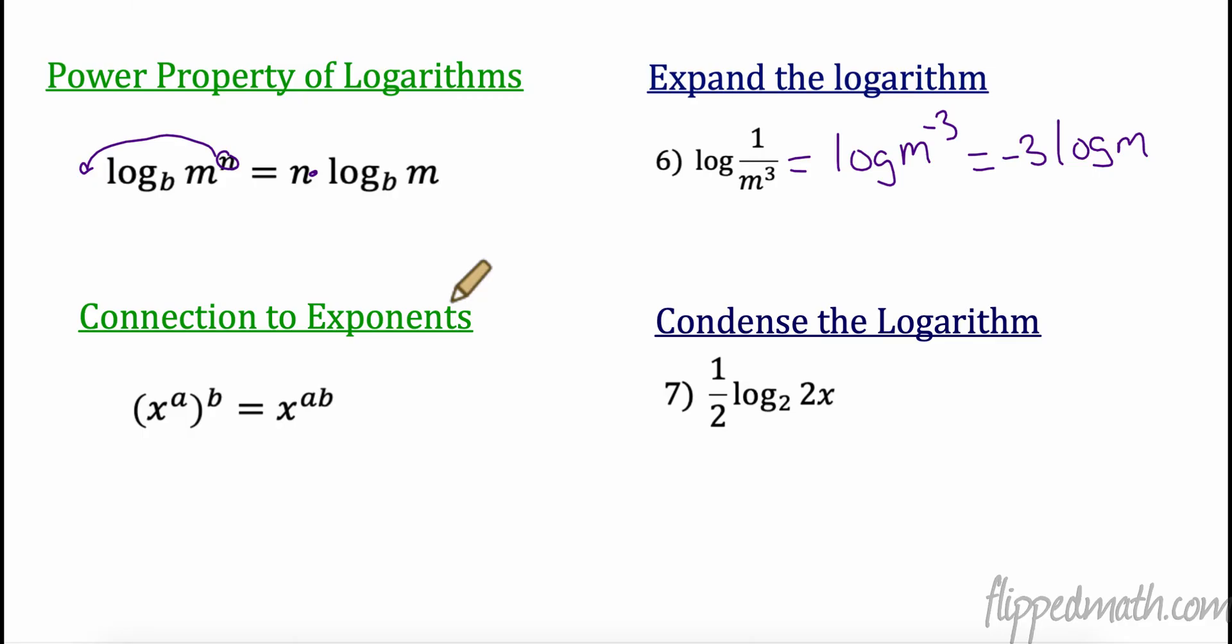Now we're going to do it backwards. So if I have something being multiplied, I can make it my exponent. So my front is going to become my exponent. So this is going to be log 2. Now all of this stuff is going to have the exponent of 1/2. Now what else can I do? Well, 1/2 is a square root, right? So let's do log 2 of the square root of 2x. And there you have your condensed logarithm. And that's the power property of logarithms.